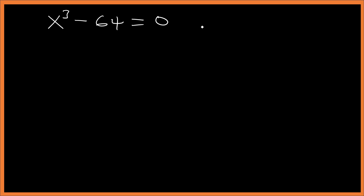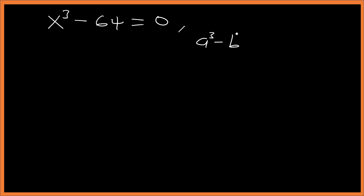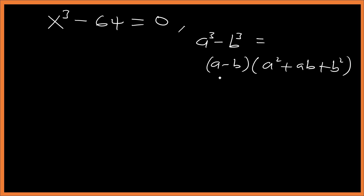Now, when you are given a cubed minus b cubed, it is the same as (a minus b) times (a squared plus ab plus b squared). We call this the difference of cubes.